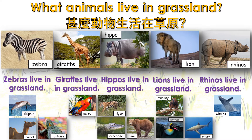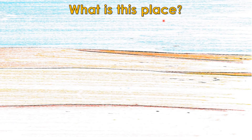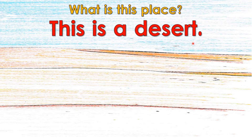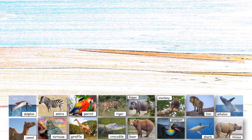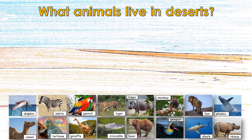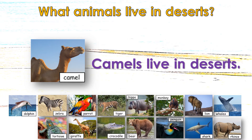Rhinos live in grassland. Habitat 2. What is this place? This is a desert. What animals live in deserts? Camels live in deserts.